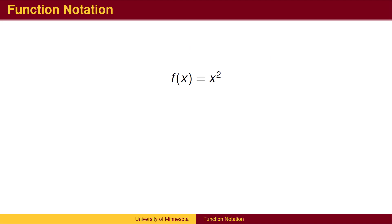In addition to representing a function with an equation or with a graph, we can also represent a function with a name or abbreviation. For example, we can use the letter F to denote the function which squares the input. F is the name of the function box. The function notation displays the three key components as follows: inside the parentheses is the input variable; x can be any number. There is a rule that describes how to calculate the output based on the input — in this case, squaring. x squared is the output.